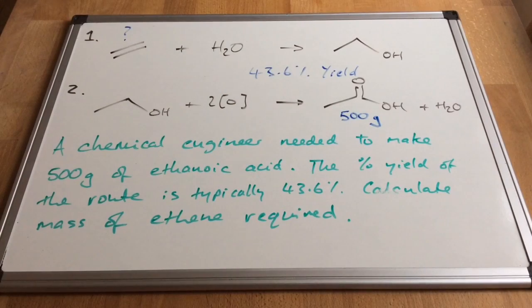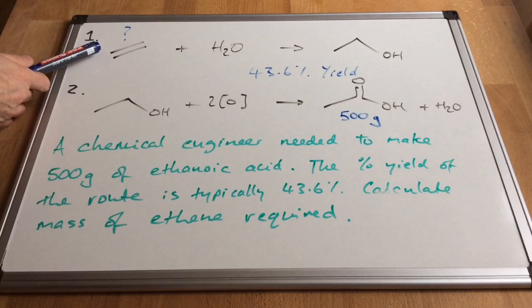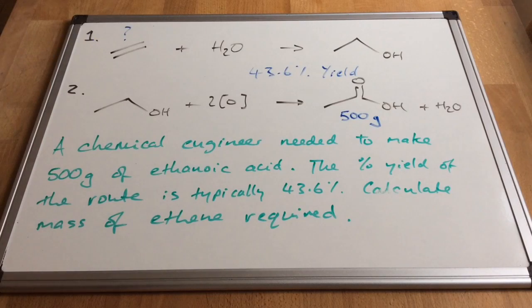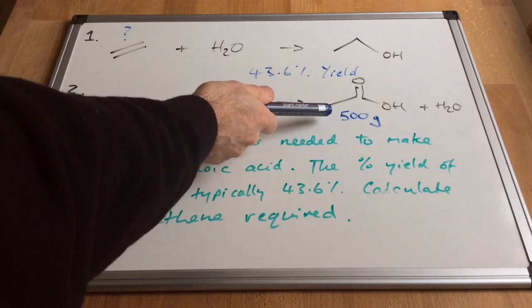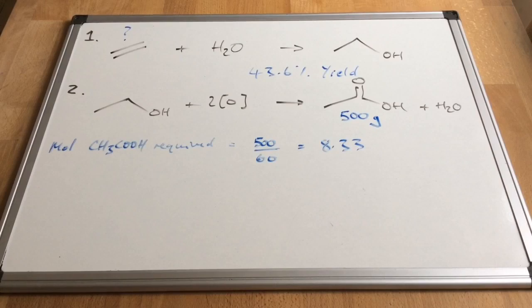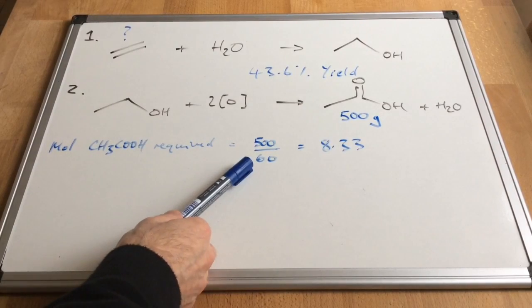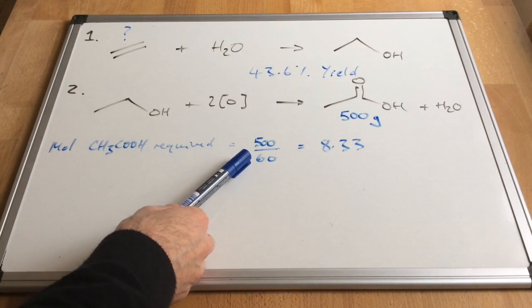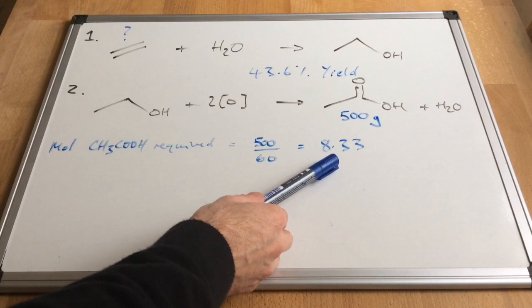So I've just put on the board there the information that we know from the question. We need to make, or the chemical engineer needs to make, 500 grams of acid. And the yield is 43.6%. How much ethene is the chemical engineer going to need? So the first thing we should do is work out how many moles of ethanoic acid we need to make. So moles equals mass over MR. The MR of the ethanoic acid is 60. So 500 divided by 60 is 8.33.